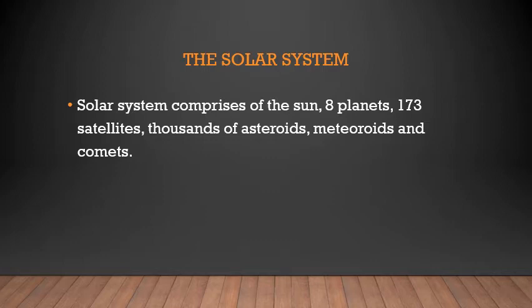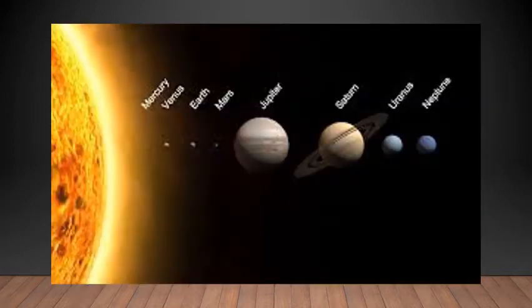Stars are self-luminous celestial bodies. The sun is also a star. The solar system is a part of the galaxy, which is also known as the Milky Way galaxy. Here is the solar system — the sun and the eight planets: Mercury, Venus, Earth, Mars, Jupiter, Saturn, Uranus and Neptune. These eight planets, along with asteroids, meteoroids, comets and satellites, make the solar system.